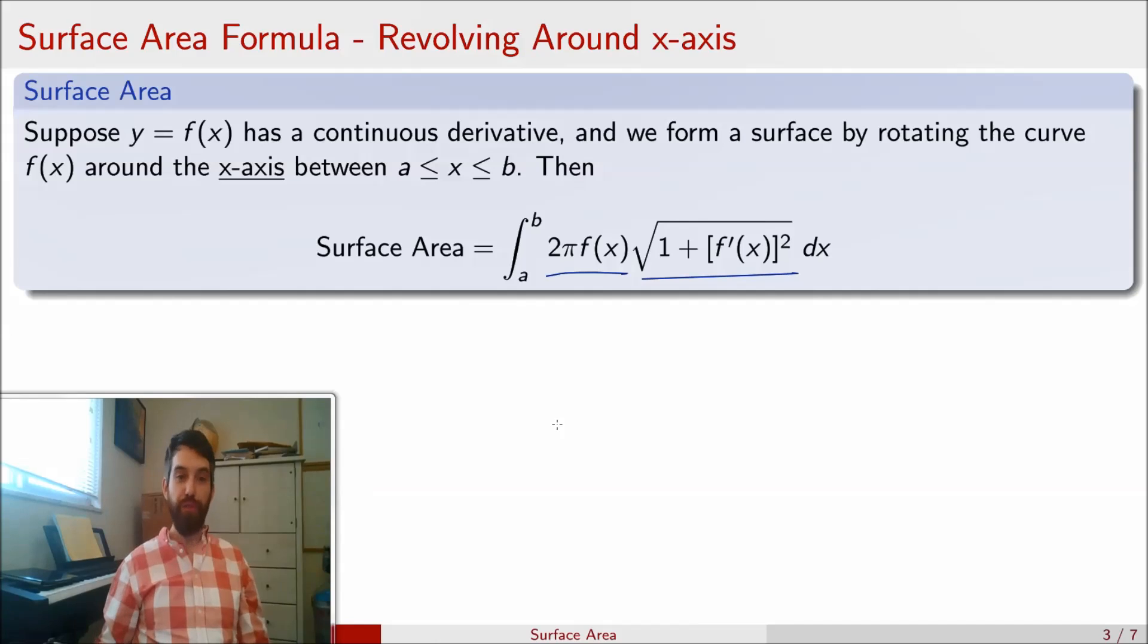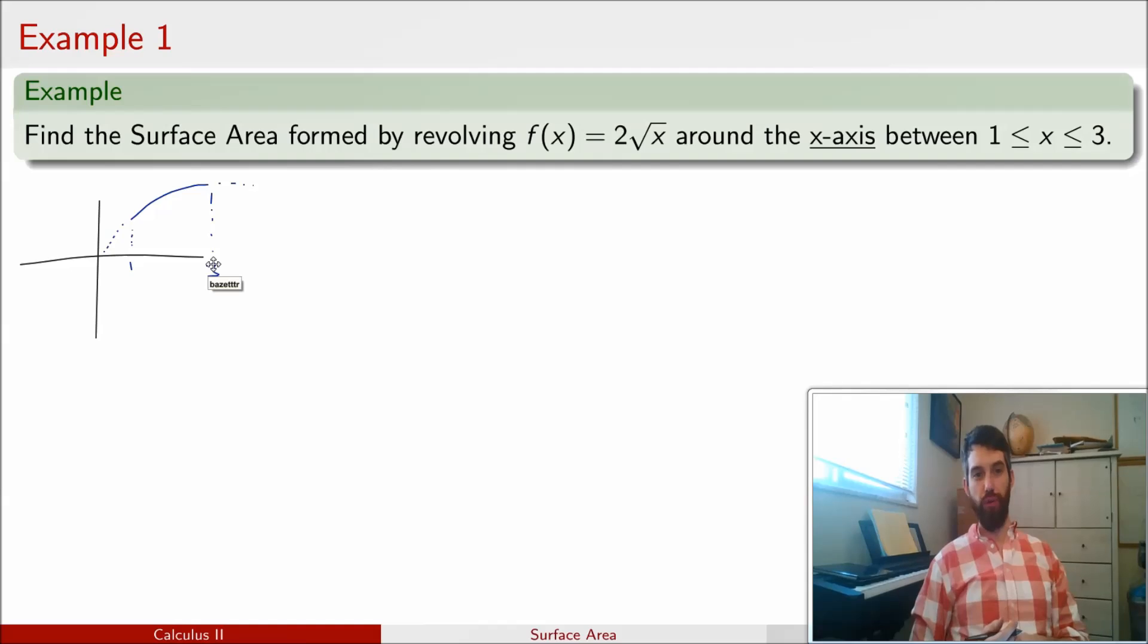So, now that we have this formula, we just get to go and apply it. So here I have the specific function 2 root x, and I've sketched it, and I'm going to imagine that I'm revolving around the x-axis, or at least the portion between 1 and 3.